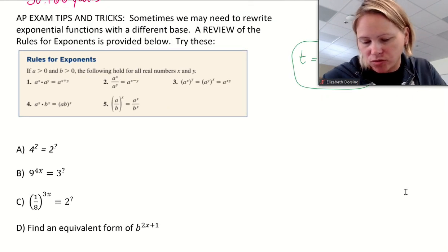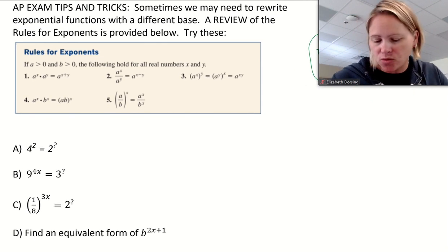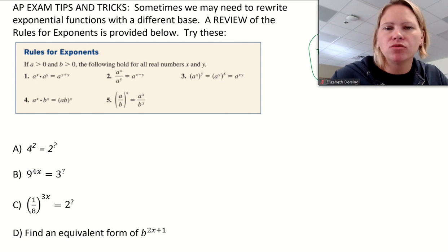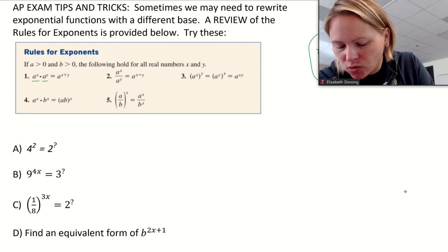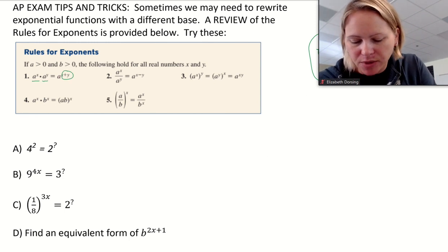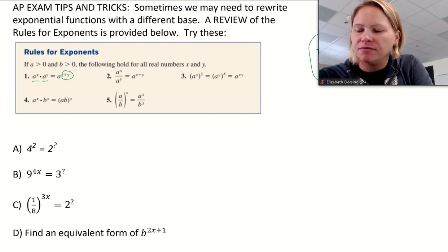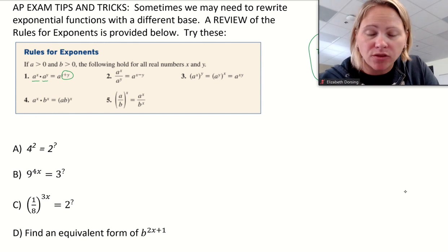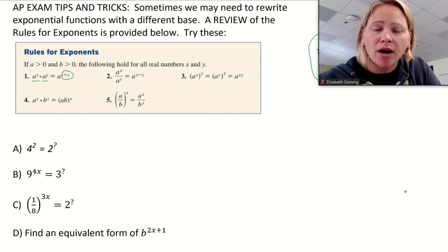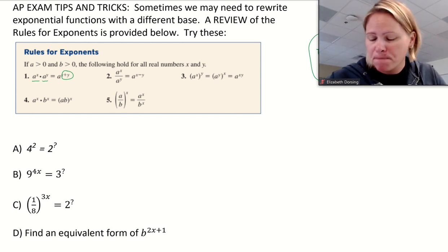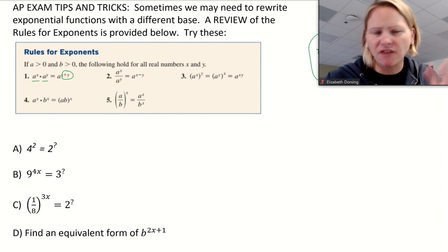Let's review a few exponent rules. Sometimes we need to think of exponential functions in a different way. First: when we multiply like bases, we add the exponents. Second: when we divide like bases, we subtract the exponents — it's numerator exponent minus denominator exponent. Third: when we have a base raised to two powers, we multiply those powers — that's called power to a power.